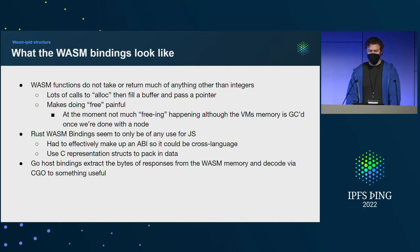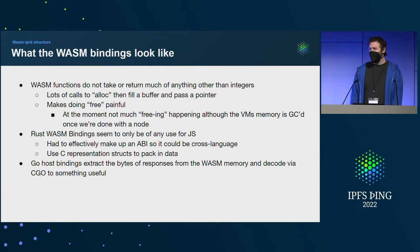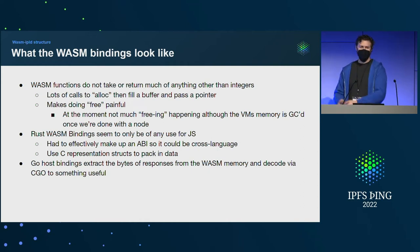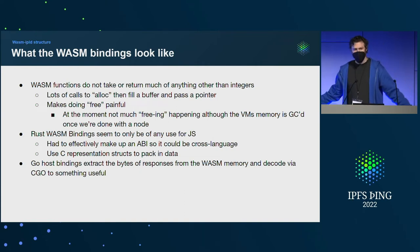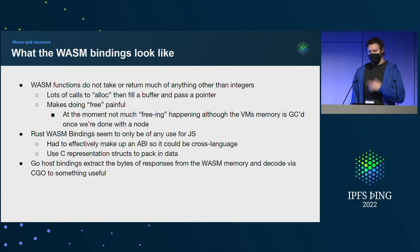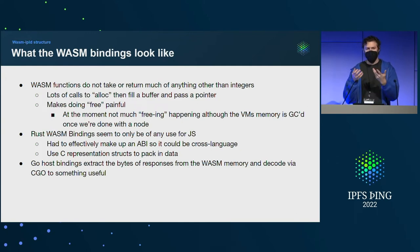Learning from WebAssembly: everything WebAssembly deals with feels like an integer. It's all you get — integers everywhere as far as the eye can see. Everything is: alloc, fill a buffer, buffer pointer is an integer, move it along, figure out freeing. The WebAssembly bindings seem to only be useful for JavaScript. So I had to make up an ABI that would work in Go and other environments. We use C representation to do this, and then the Go host bindings use CGo to undo all the C representation stuff and get something a Go developer can actually interact with.